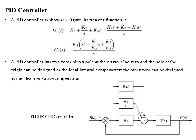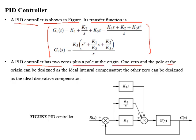A PID controller is shown in the figure and its transfer function is given by GC(s). A PID controller has two zeros plus a pole at the origin. One zero and one pole at the origin can be designed as the ideal integral compensator. The other zero can be designed as an ideal derivative compensator. In a PID controller, a sum of proportional error, integral of error, and derivative of error are forwarded to the plant.